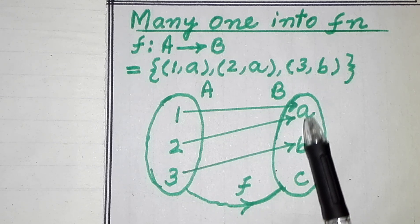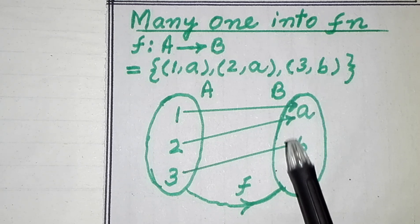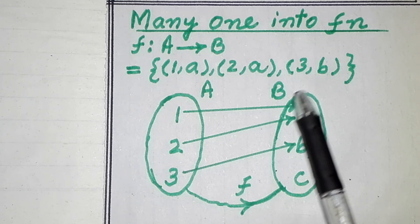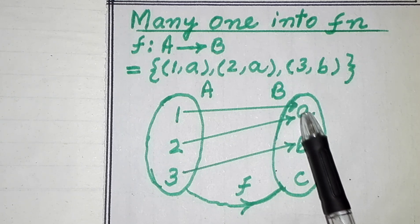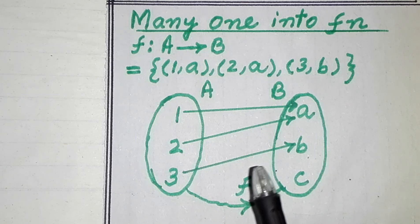And dear students, these inner elements make the range, while the whole of this set makes the co-domain of this function. And here, range is not equal to co-domain, but range is smaller than co-domain. So this is also an into function.